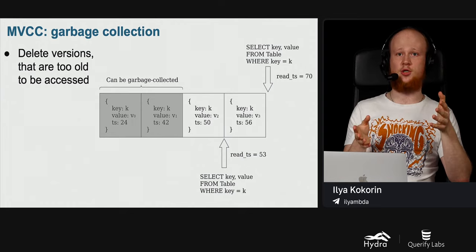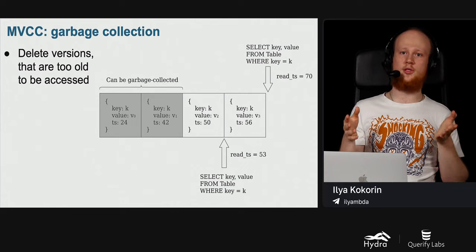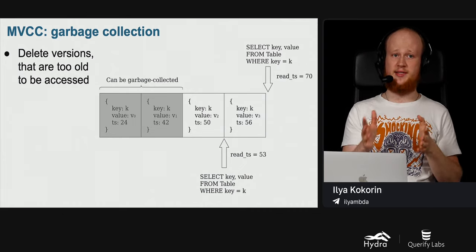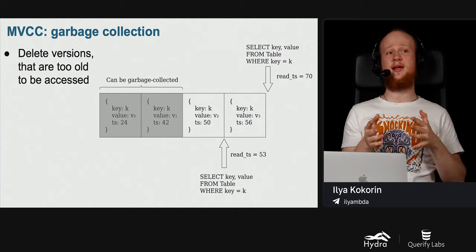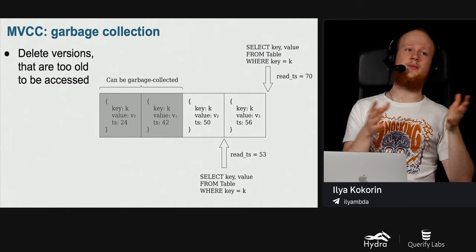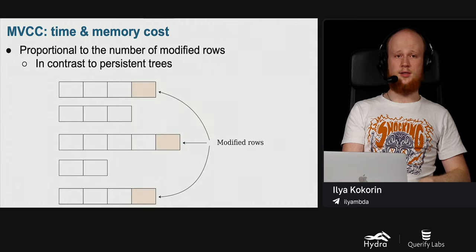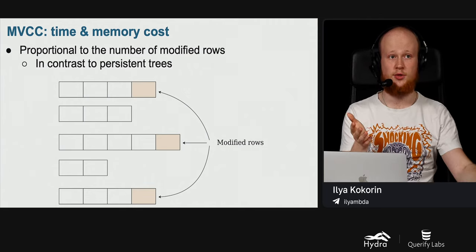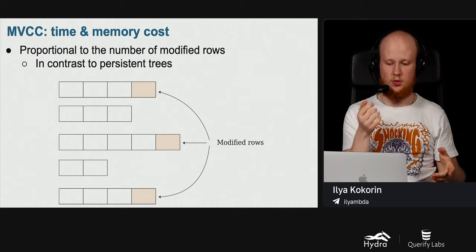Note that updates only create new versions of rows, and versions are never deleted. So the volume of our database grows constantly. To reduce database size, we can detect versions that are too old to be accessed — for example, versions created a month ago that will never be accessed — and garbage collect them. The time and memory cost of MVCC is proportional to the number of modified rows: a single-value update creates only one new version, in contrast to persistent trees where a single update caused copying a logarithmic number of nodes.